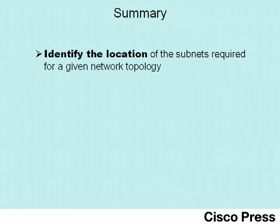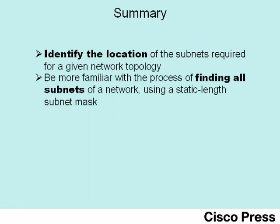This concludes ICND1 Lab 7. In this lab, you've seen how to identify the location of subnets required for a particular network topology, you've become more familiar with the process of finding all subnets of an IP network when using the same length mask throughout, and we've reviewed the process of finding the range of IP addresses in each subnet.